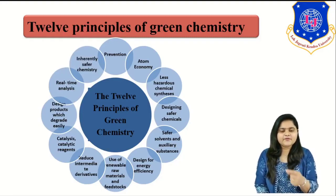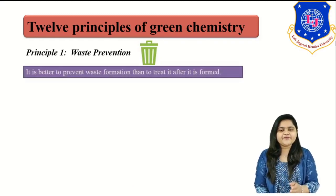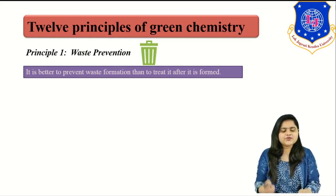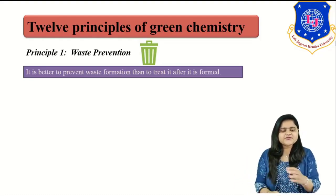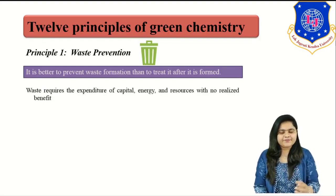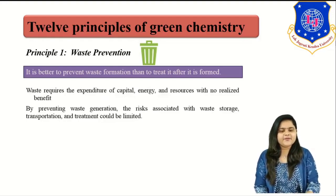We will see each and every principle in detail with examples. The first principle says waste prevention — it is better to prevent waste formation than to treat it after it is formed. After waste is generated, we need to think about treatment, storage, and transportation of the waste. Rather than that, think of waste reduction at the source itself, at the formation stage — reduce the waste generation. Waste requires the expense of capital, energy, and resources with ideally no benefit. By preventing waste generation, the risk associated with storage, handling, transportation, and treatment can be limited.